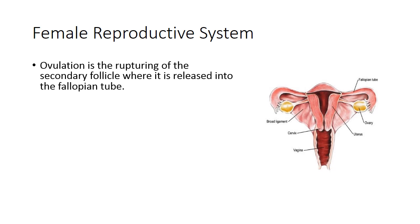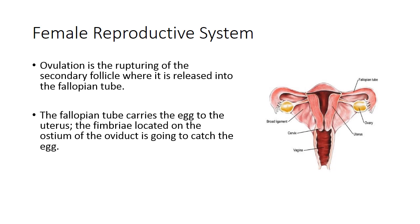Ovulation is when the mature Graafian follicle — also called the secondary follicle — ruptures. When this follicle ruptures, the egg enters the fallopian tube. The fallopian tube has small fimbriae on the ostium that act like little hairs to catch the egg and pull it into the oviduct. The ovary and fallopian tubes are not directly attached — the fimbriae must catch the egg — and then the tube carries the egg to the uterus.